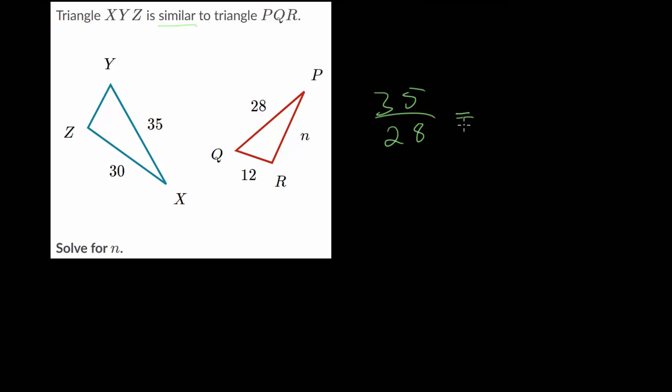And when we simplify this fraction, notice they're each divisible by 7. So we get 5 fourths, which is 1.25. We figure out the proportionality constant.